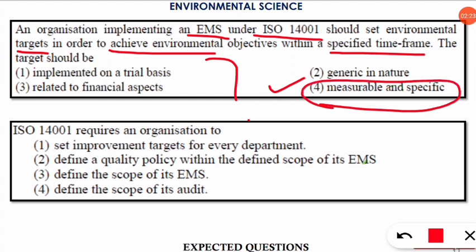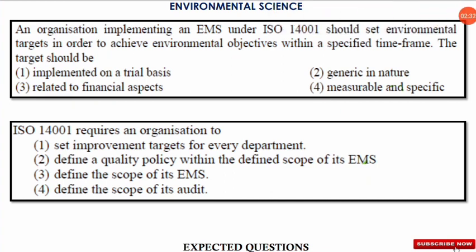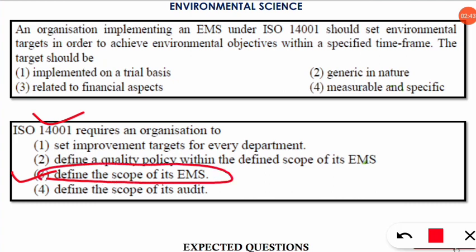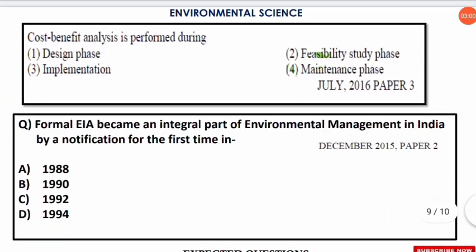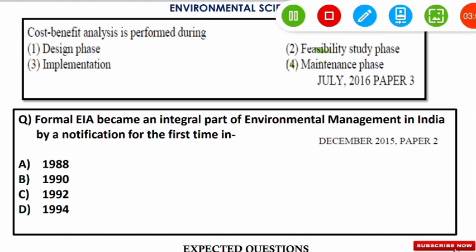The next question is: ISO 14001 requires an organization to do what? The correct option is option number three — ISO 14001 requires an organization to define the scope of its environmental management system. ISO standards are very important for the NET exam. A link in the description provides a video with tricks to remember all important ISOs.